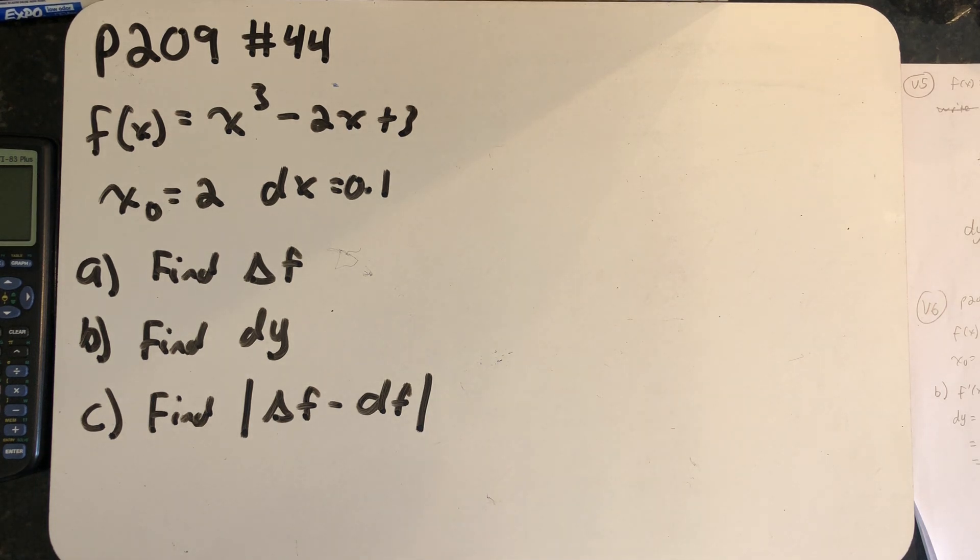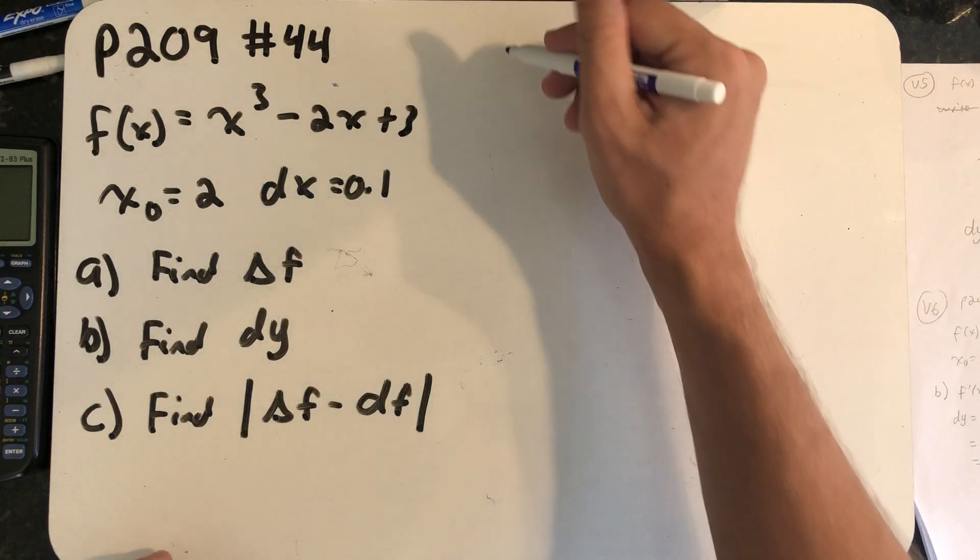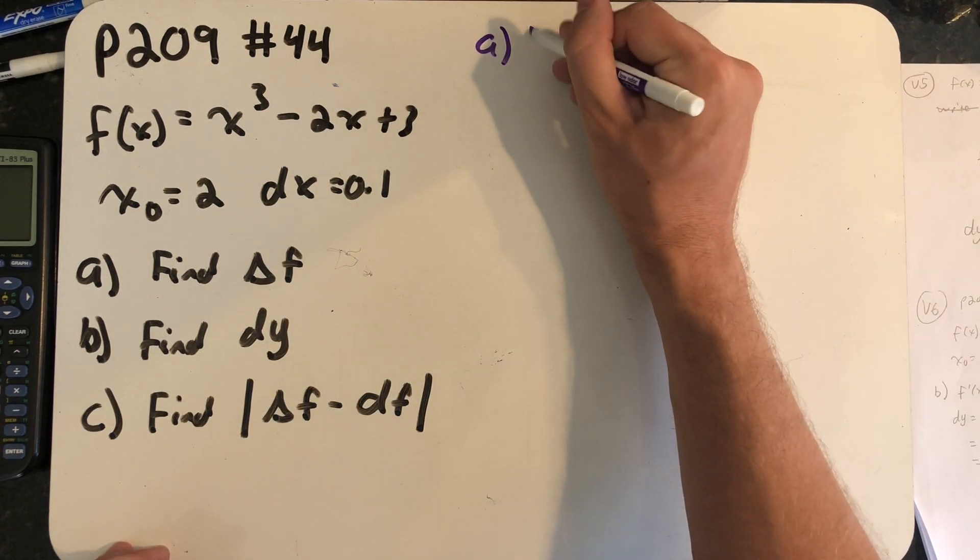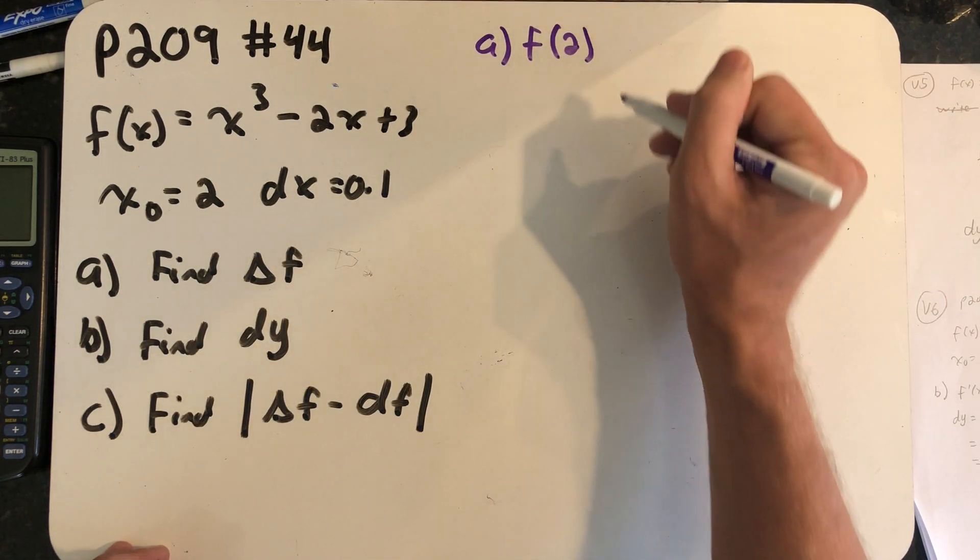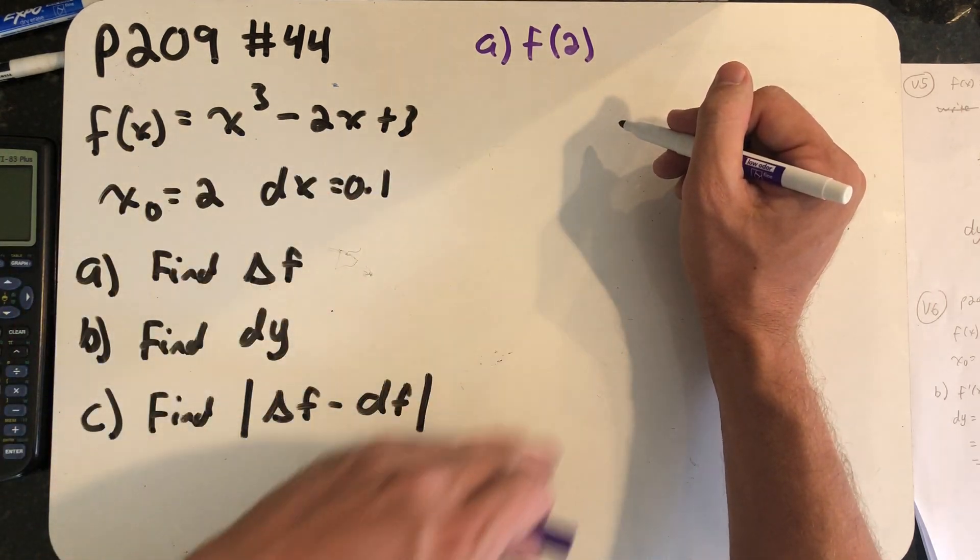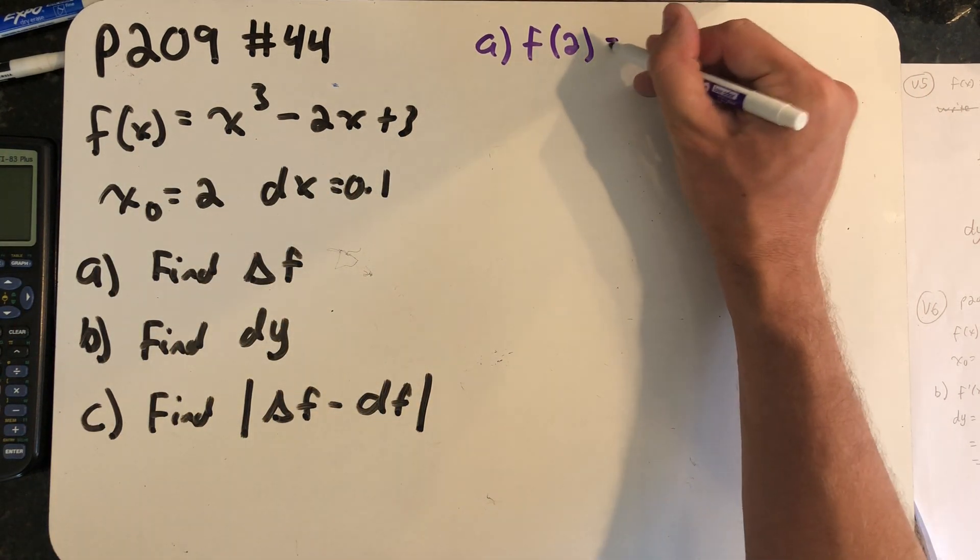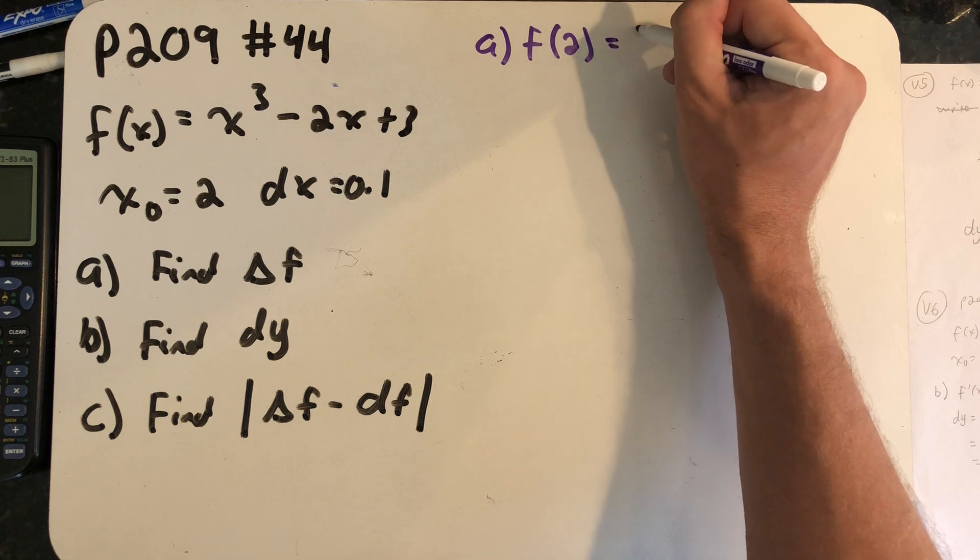To find Δf we need to find two function values first. I need to know f(2), so I plug 2 into the function. You should take a moment and do that, but you'll find out that f(2) is 7.